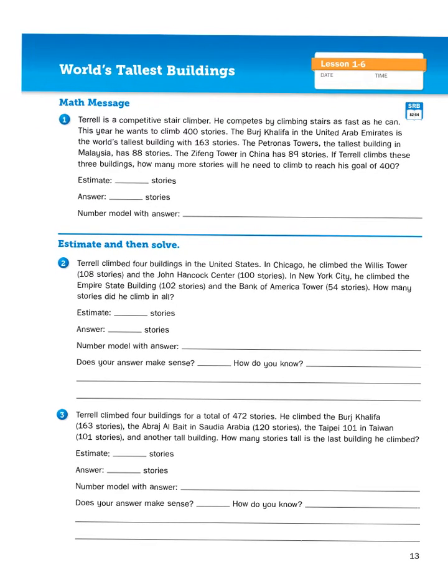Terrell is a competitive stair climber. He competes by climbing stairs as fast as he can. This year he wants to climb 400 stories. The Burj Khalifa in the United Arab Emirates is the world's tallest building with 163 stories. The Petronas Towers, the tallest building in Malaysia, has 88 stories. The Zifeng Tower in China has 89 stories. If Terrell climbs these three buildings, how many more stories will he need to climb to reach his goal of 400?